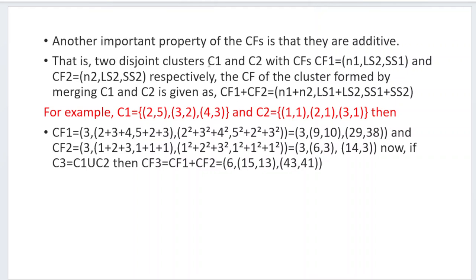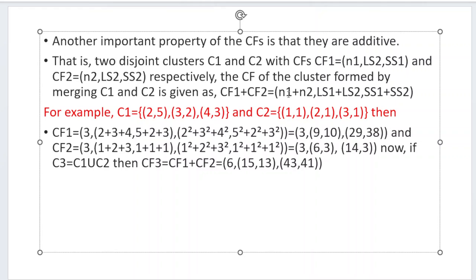If there are two disjoint clusters C1 and C2 with cluster features CF1 and CF2, and we want to merge them, we simply add: CF1 + CF2 = (n1+n2, ls1+ls2, ss1+ss2). This gives us the combined cluster feature for the merged cluster.